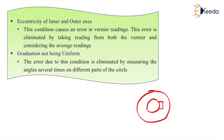We have two verniers — vernier A and vernier B — and we have to take readings from both. To find angle AOB, we take the average of both verniers. Next, the graduation not being uniform: the graduations of the ring should always be uniform. This error can be eliminated by measuring the angle several times on different parts of the circle — for example, using 0 to 90 degrees, then 90 to 180 degrees — to verify whether the angle is consistent.